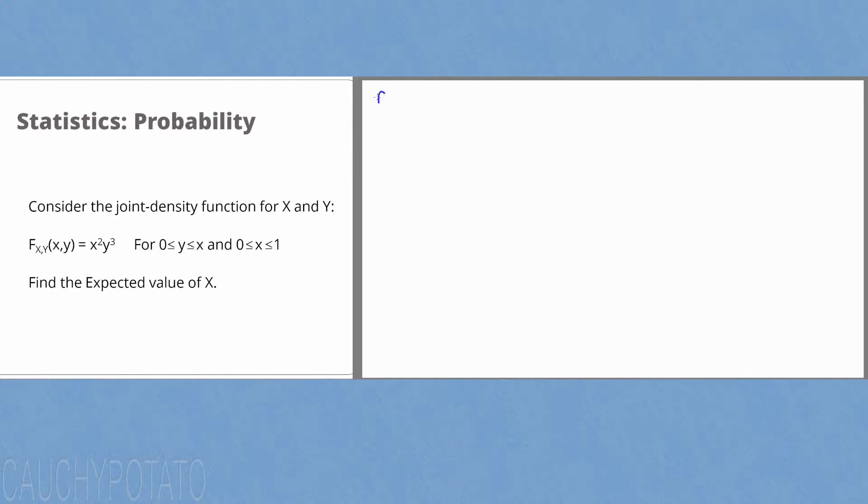The given data: f(x,y) equals x squared times y to the third on 0 less than or equal to x less than or equal to 1, 0 less than or equal to y less than or equal to x, and everywhere else f(x,y) is equal to 0.